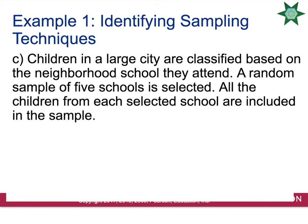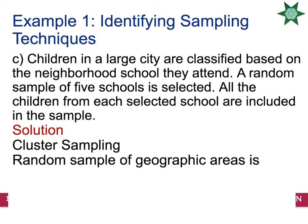Children in a large city are classified based on the neighborhood school they attend. A random sample of five schools is selected, and all of the children from each selected school are included in the sample. This is going to be a cluster sample, because you have split the area up by geographic areas and ended up using an entire cluster to tell you about the whole geographic area.